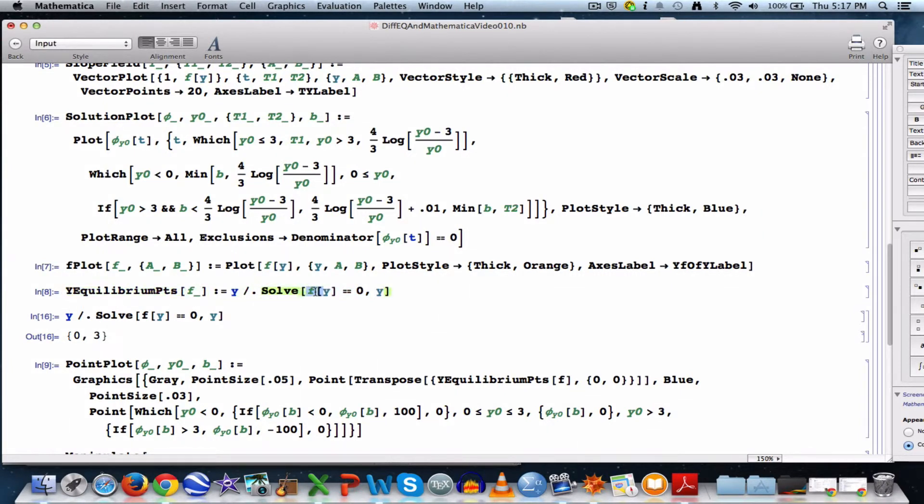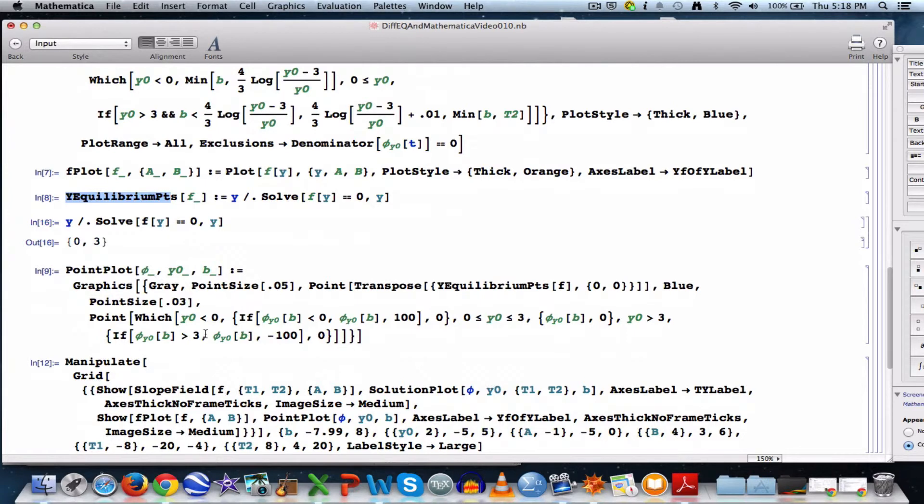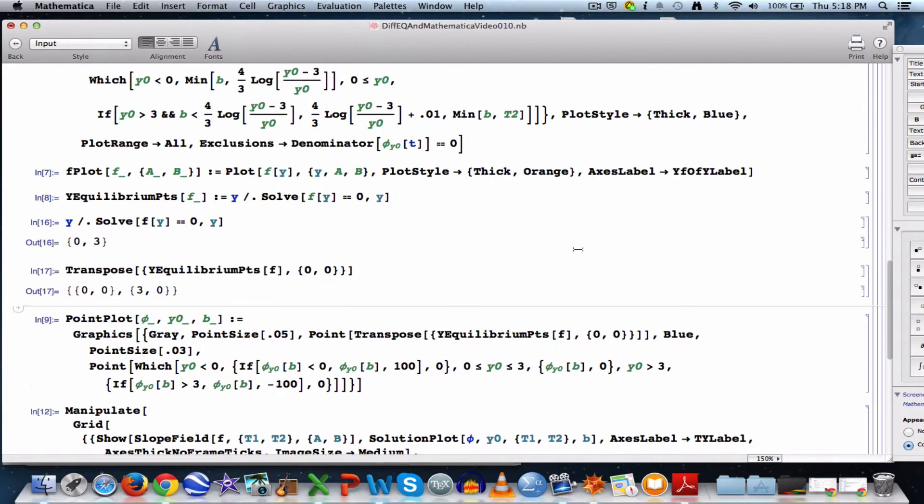It's this thing. But it doesn't matter that I've defined that outside this y equilibrium points function because internally here it treats f as a local variable and it would allow me, for example, to use other functions with this y equilibrium points as I will in future videos. Doing this stuff right here creates, I can just actually copy and paste this out here to show you what it does. That creates a list of points, 0, 0, and 3, 0, that I can plot with point. Those were the equilibrium points.